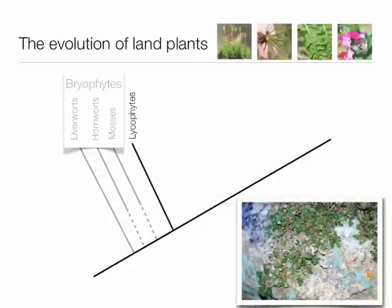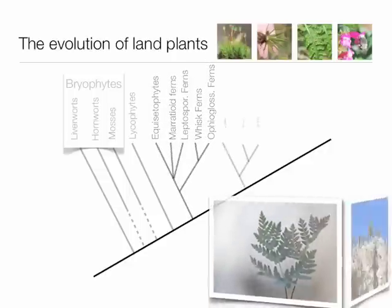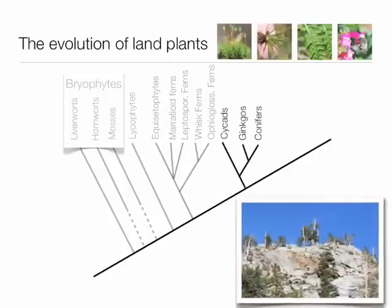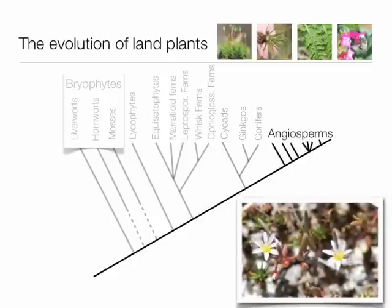Breaking off next we have lycophytes, which includes Selaginella. From here on out we have vascular tissue in plants and a sporophyte-dominant life cycle. And then we have the group that includes ferns, followed by gymnosperms — which brings the evolution of seeds and pollen — and finally angiosperms, which make up most of the vegetation you see on the landscape and have evolved the traits of flowers and fruits.